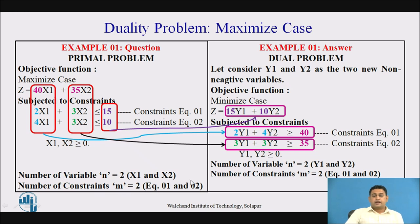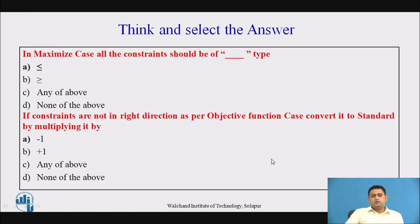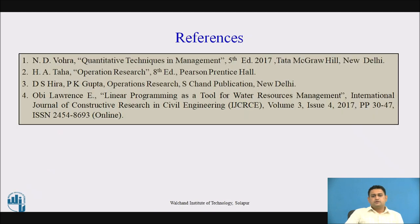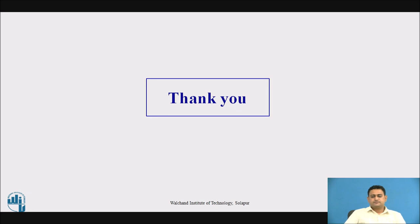As per the last point, the number of variables in the dual is n = 2 and the number of constraints is m = 2, which matches the requirement. The number of constraints in the primal is 2 and the number of variables in the dual is 2. This dual problem is now in standard form. Now let us select the correct answers for the MCQs. The correct answers are as shown in the slide. These are the references for today's session. Thank you, see you next time.